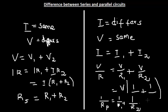So if a number of resistors or bulbs are connected in a parallel combination, the reciprocal of the effective resistance will be equal to the sum of the reciprocals of the individual resistances.